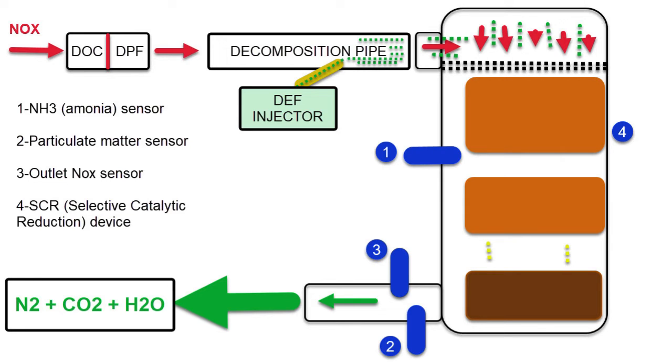The third, or ammonia slip element at the very bottom, the dark brown one, its job is to catch those yellow dots, which is ammonia that wasn't catalyzed in the first two elements, and then break that down so that we have no ammonia going out of the tailpipe.